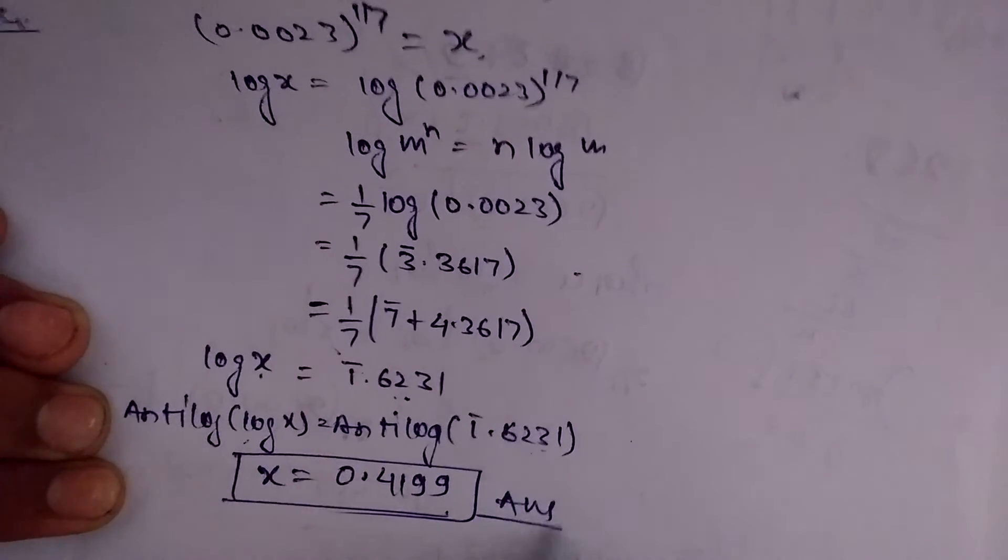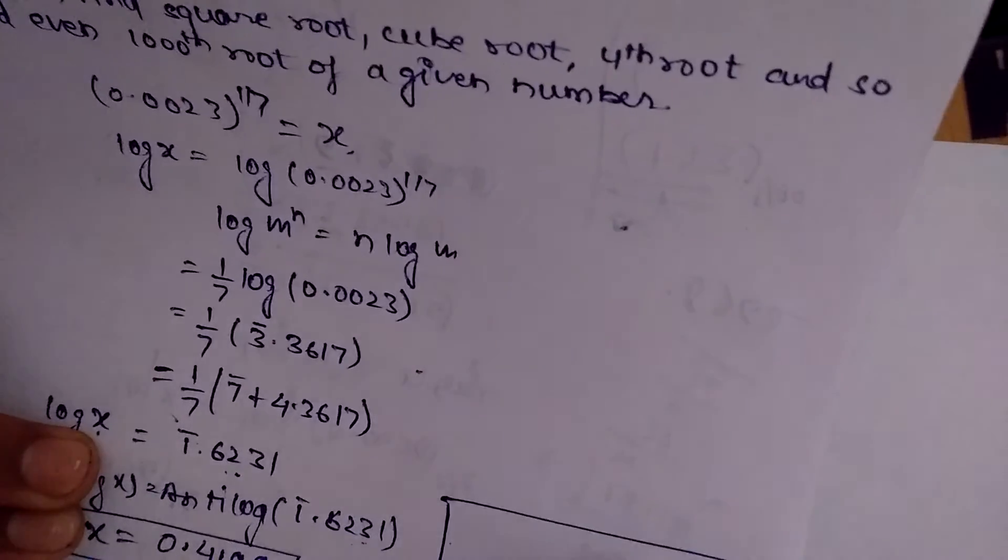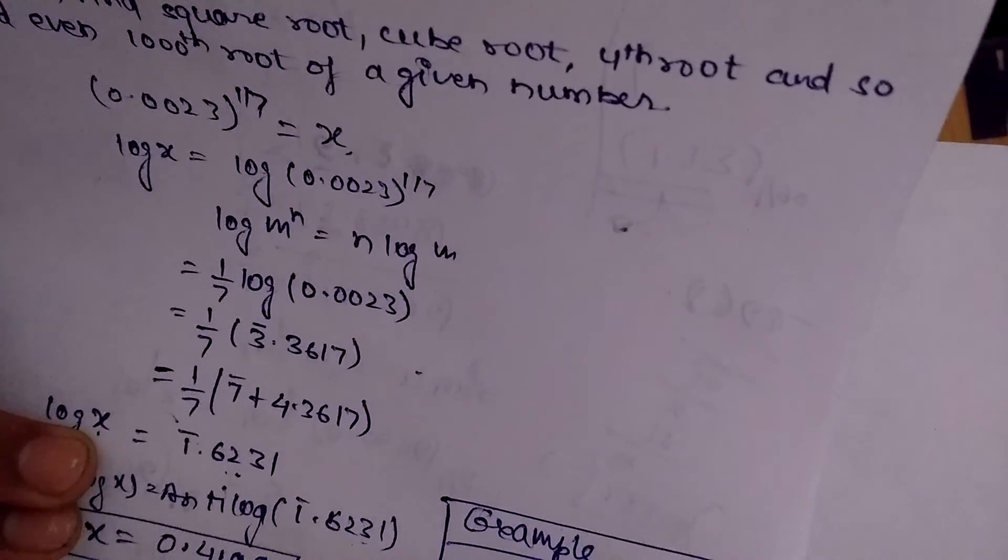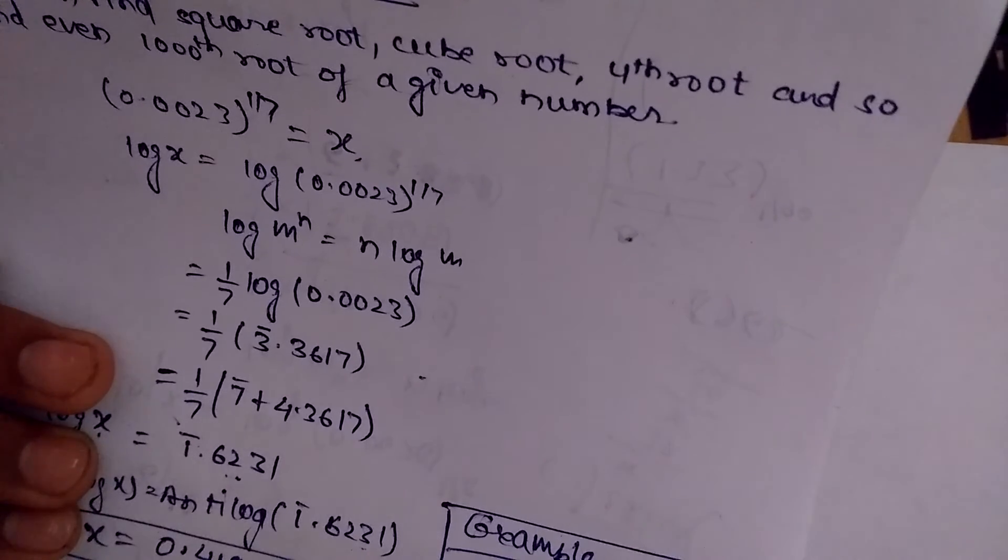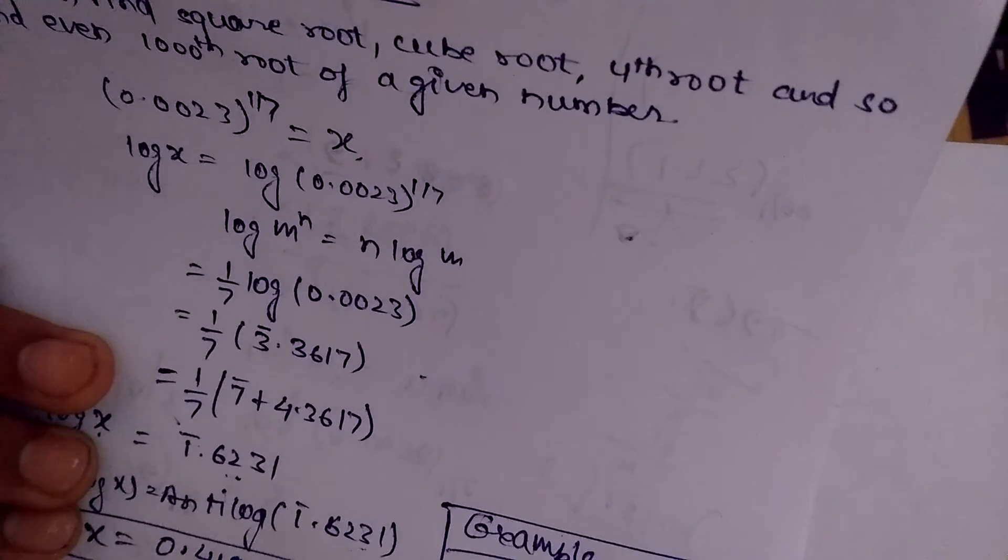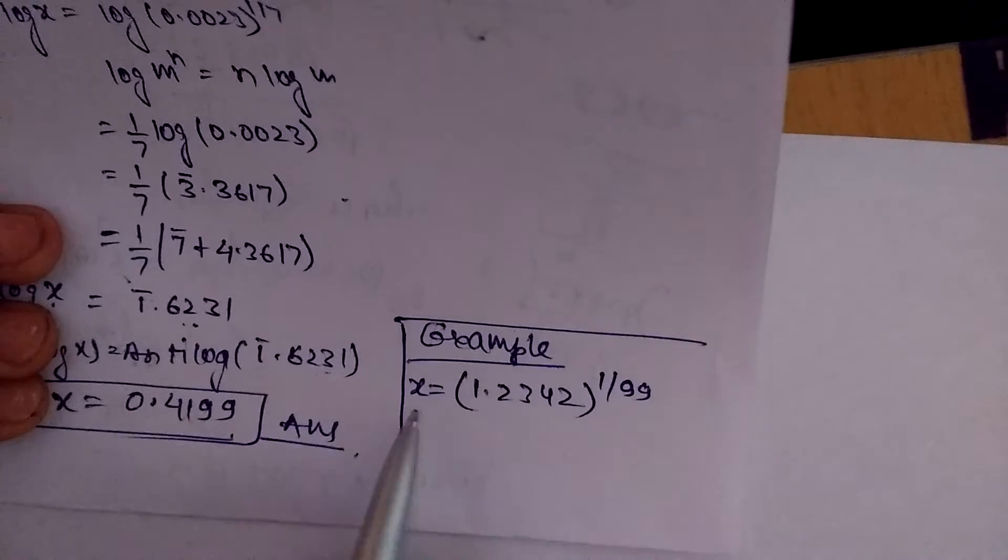We can also take some other examples in which we will follow the same procedure. For example, we will take a number 1.2342 and we are interested in getting the 99th root of this number. We will again suppose it equal to x.